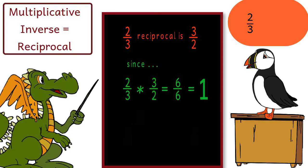With fractions, finding the reciprocal is easy. All you do is flip the fraction. 2 thirds reciprocal is 3 halves, and 3 halves reciprocal is 2 thirds.